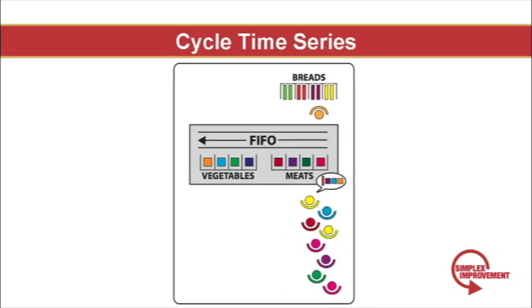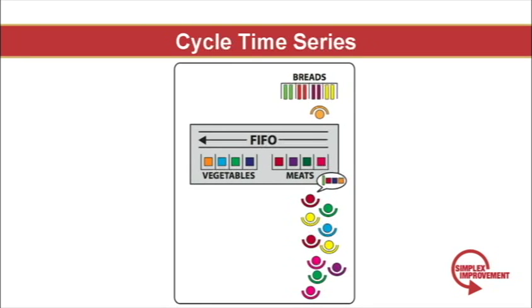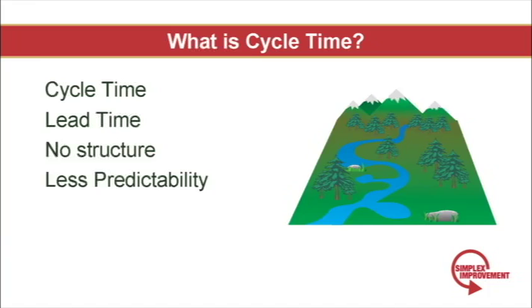Now let's relate this back to the stream example. Imagine a leaf represents an order from a customer. In this example, a leaf may make it out quickly, or it may sit and make many loops in a pool on the side of the stream.